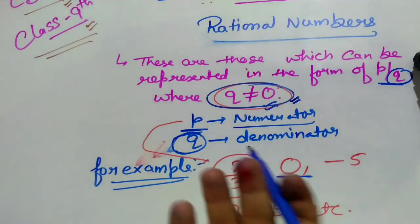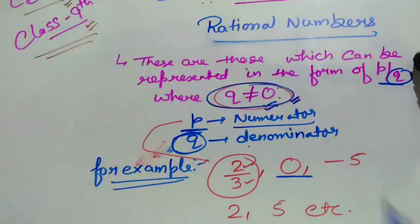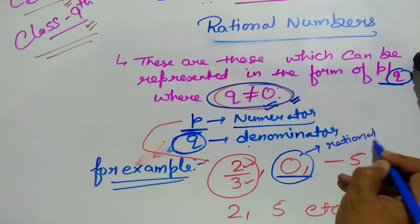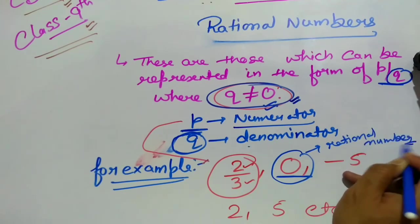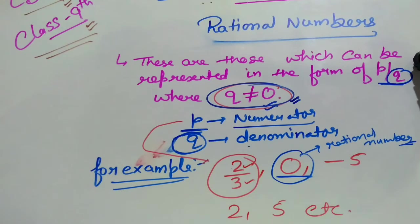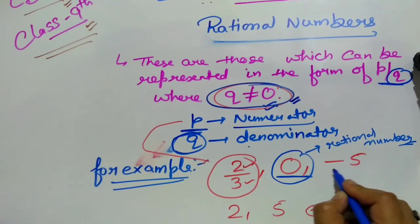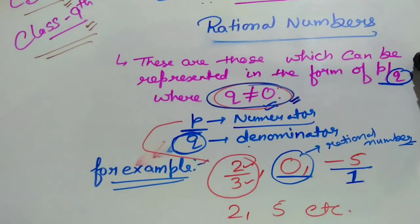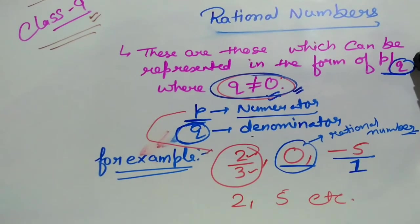Now, minus 5 — is it a rational number? Because denominator is not shown, we take it as 1. If we write minus 5 upon 1, then minus 5 is rational. Similarly, 2/5 — the denominator is not 0, it is 5, so this is also a rational number. So these are all rational numbers.